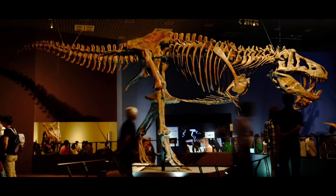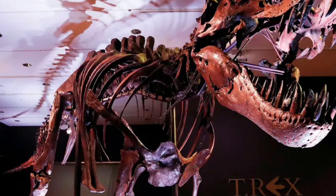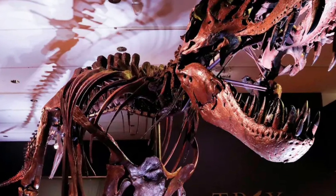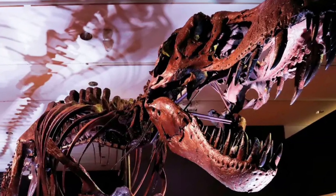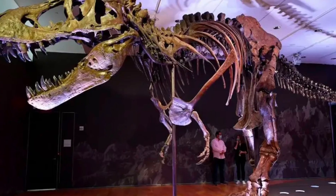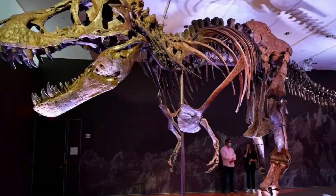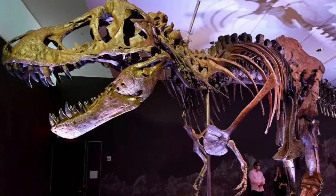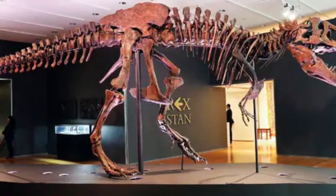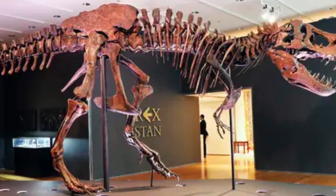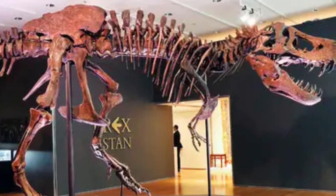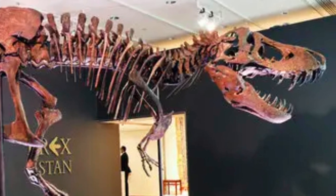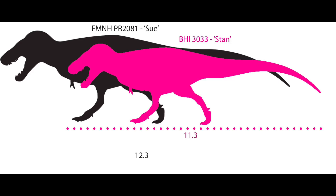Now let's get into the T-Rex reconstruction. I will be basing the Rex off of Stan, BHI-3033. Stan is a very complete Rex and is the most reproduced for casts in museums. It is also around 10.9 meters, or roughly 35 feet long, so it isn't by any means the largest Rex.